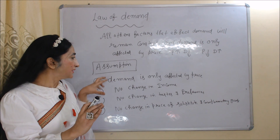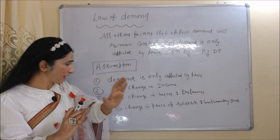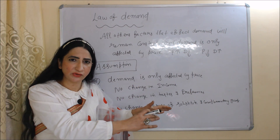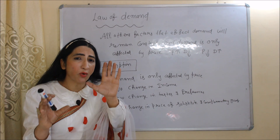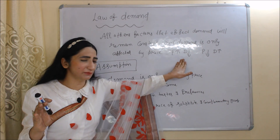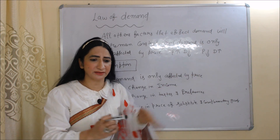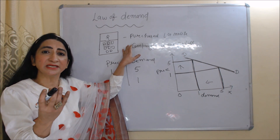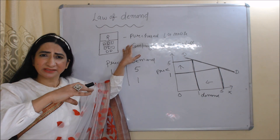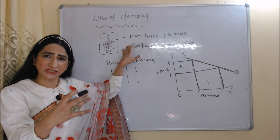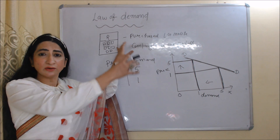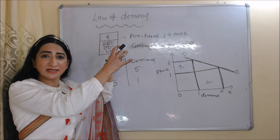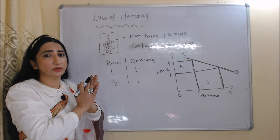An example of the law of demand: I purchased an LG mobile because the company gave me 20% off. My income is the same, my taste and preferences are the same, and even price of other mobiles are the same. I only purchased this mobile because the company gave me 20% off. So here my demand is only influenced by price — this is called law of demand.